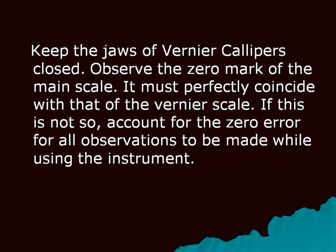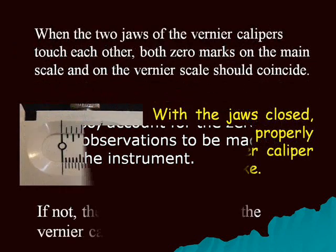Keep the jaws of the vernier calipers closed. Observe the zero mark of the main scale — it must perfectly coincide with that of the vernier scale. If this is not so, account for zero error for all observations to be made while using the instrument.